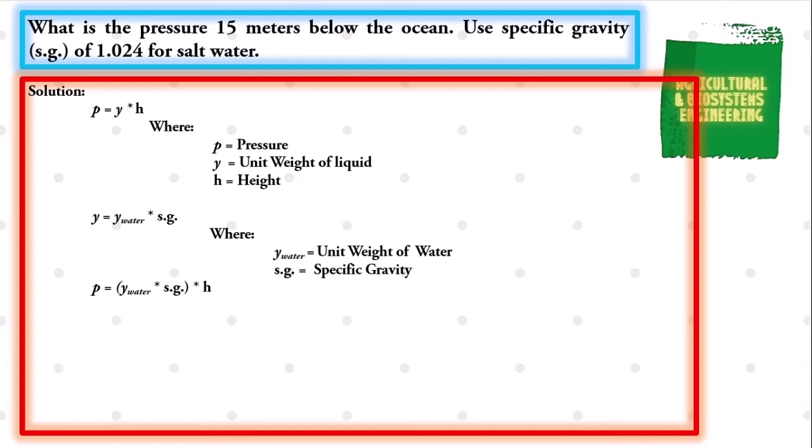We substitute values and we have pressure is equal to the product of the constant value of the unit weight of water to be 9.81 kilonewton per cubic meter times the specific gravity of 1.024, multiplied to the height of 15 meters.